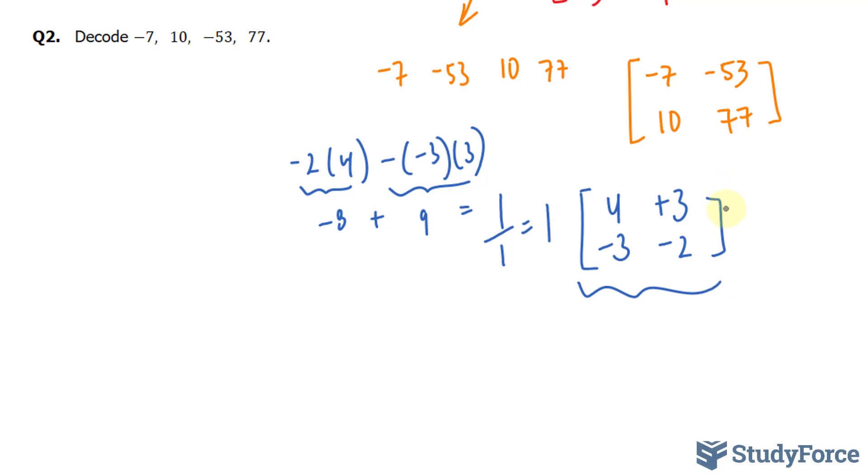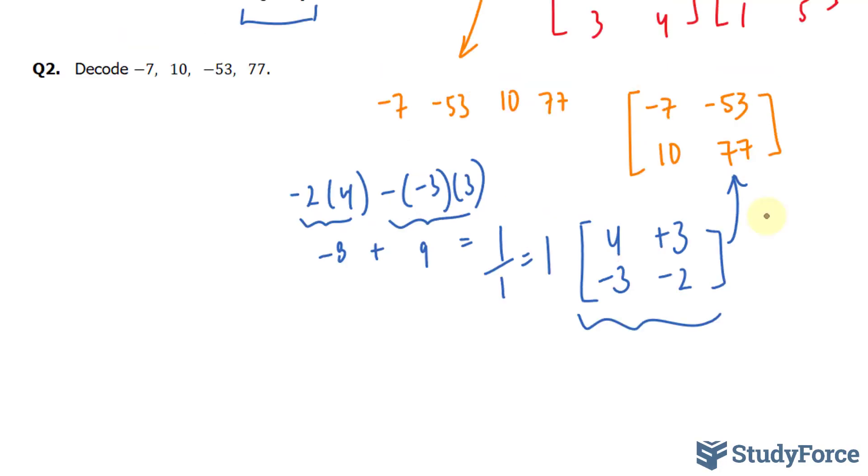And what we do with this matrix is multiply it to this one. Because by multiplying it to the one in orange, we actually end up with the one we started with. So let's go ahead and do that. And just to be clear, I'm multiplying this matrix, which I'll call A inverse, multiplied to B. And I just assigned these letters randomly. So to multiply this to this, we have 4 times -7 plus 3 times 10.